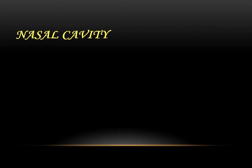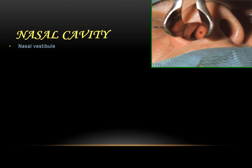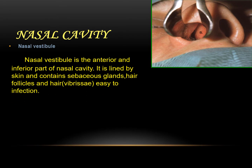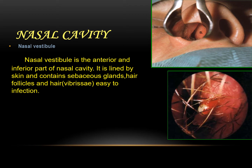Going from the external nose to the nasal cavity: it consists of the nasal vestibule, which is in the anterior and inferior part of the nasal cavity. It is lined by skin and contains sebaceous glands, hair follicles, and hair called vibrissae, which are easy to get infected. As you can see in this photo, there is a furuncle, or small abscess, in the vestibule of the nose.